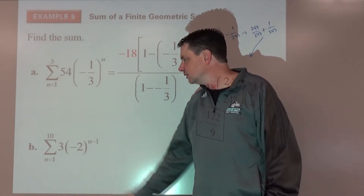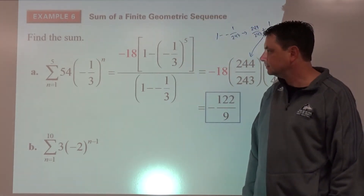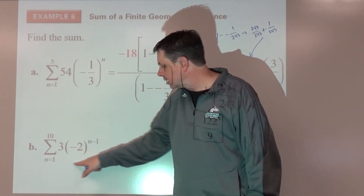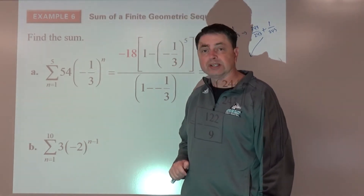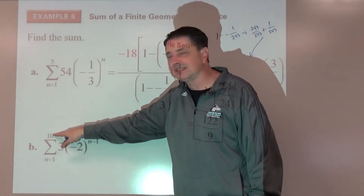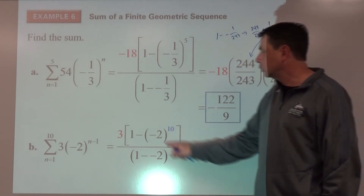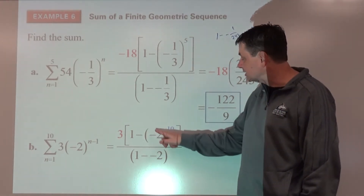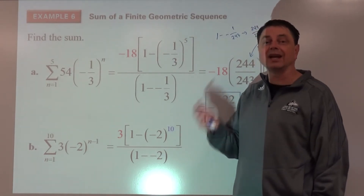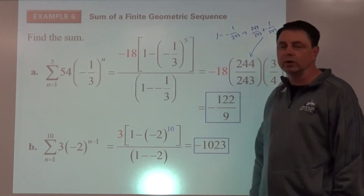Part b: sigma of 3 times negative 2 to the power of n minus 1, doing s-sub-10. A-sub-1: substitute n equals 1 — negative 2 to the zero is 1, times 3 is 3. Formula: 3 times one minus negative 2 to the tenth, divided by one minus negative 2. Negative 2 to the tenth power is positive, so one minus that positive number gives a negative divided by 3. The result is negative 1023.